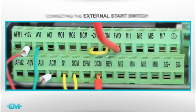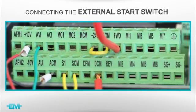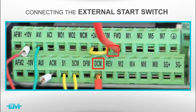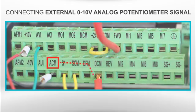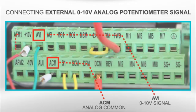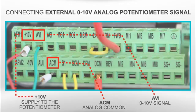Now we will show you how to connect the external start switch. You will use the following two terminals: DCM, which is your digital common, and FWD, which is your forward start command, or REV for reverse start command. To connect an external 0 to 10 volt analog potentiometer signal, use ACM, AVI, and plus 10 volt. This is not necessary if you have a direct 0 to 10 volt source.